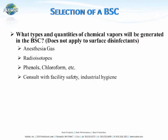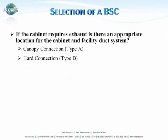The next question is: what types and quantities of chemical vapors will be generated in the BSC? Are you working with anesthesia gas, radioisotopes, phenyls, chloroform, et cetera? You'll want to consult your facility EH&S department to find out what they recommend. If your cabinet does require exhaust, is there an appropriate location with access to the facility duct system — whether a canopy-connected Type A1 or A2 cabinet or a hard-connected Type B1 or B2 biological safety cabinet?